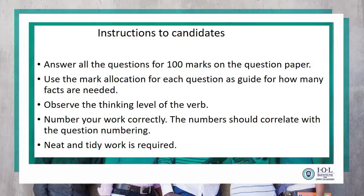Observe the thinking level of the verb. We do have verbs at the beginning of our modules — please go through them as well. You observe the thinking level before you answer; that's also a guidance. Number your work correctly — the numbers should correlate with the question numbering. When you are answering, if it's 2.11, number your answer as 2.11.